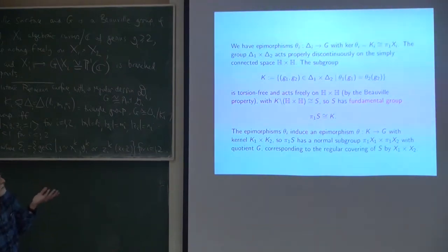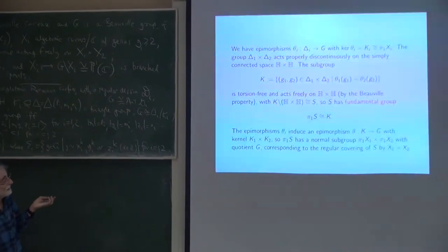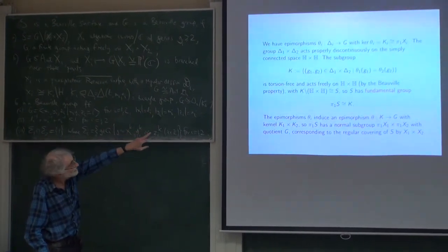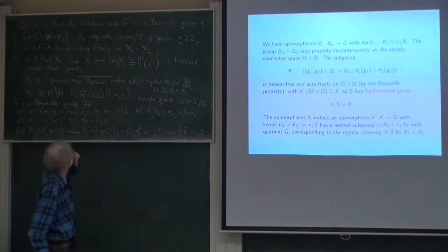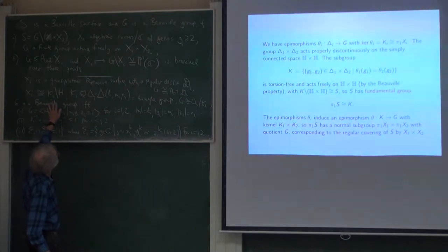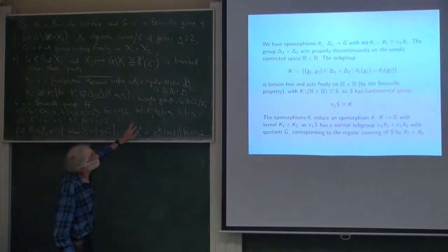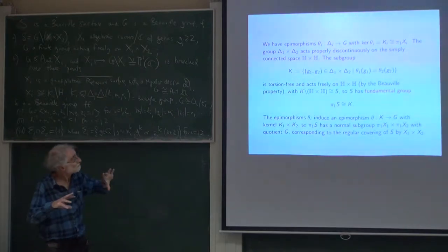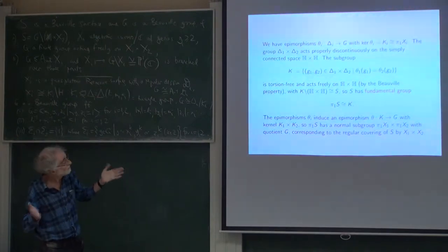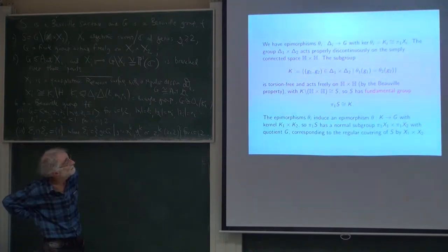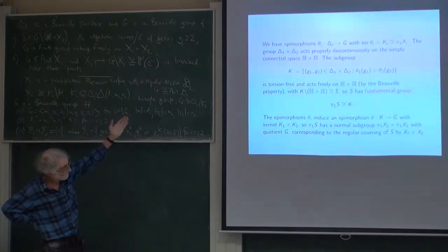The other thing you might want to know is what is the fundamental group of the surface. That's not so difficult to describe. Going back to the triangle groups: G is a quotient of two triangle groups, Δ₁ and Δ₂, which are acting on the hyperbolic plane. You have a surface group Kᵢ — the kernel of the epimorphism onto G.